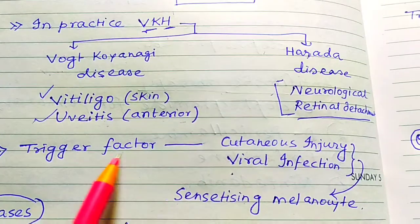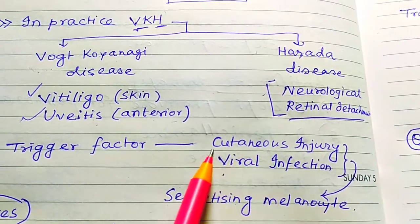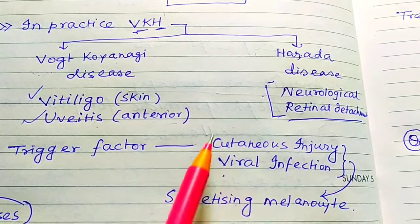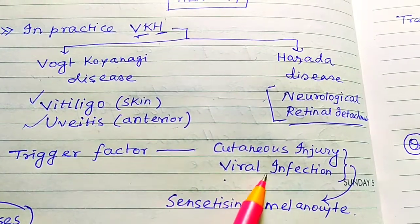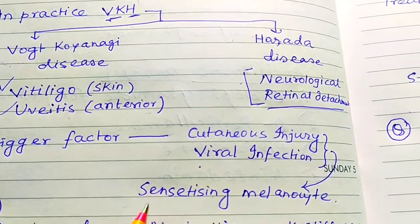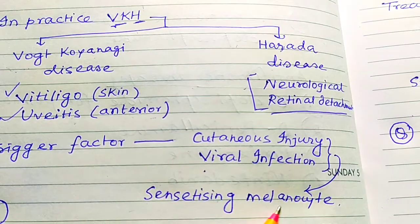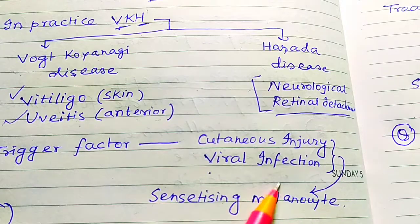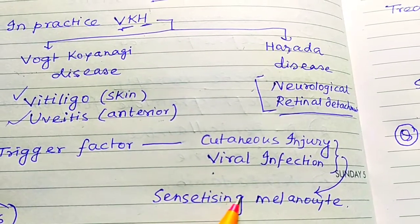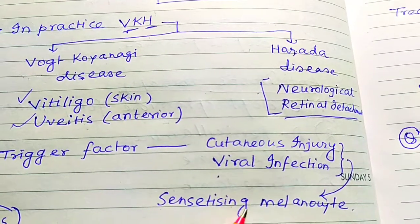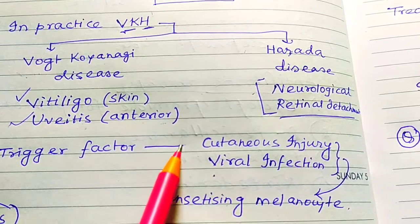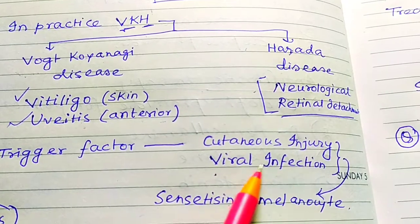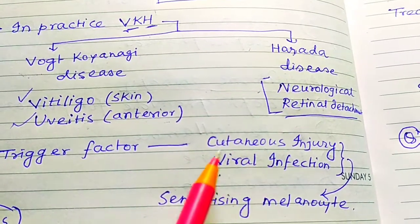The trigger factors for this disease are cutaneous injury — if there is a skin injury — and viral infection, which can sensitize the melanocytes, the pigment-forming cells. These are the important trigger factors.